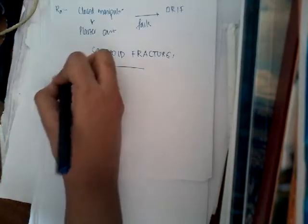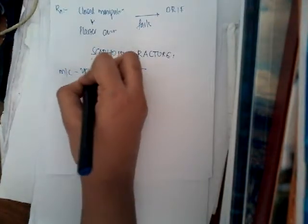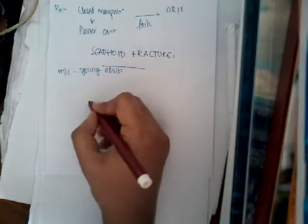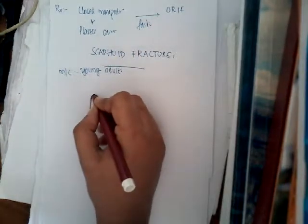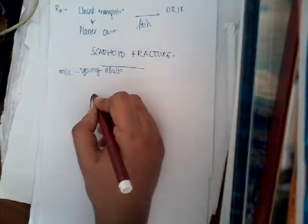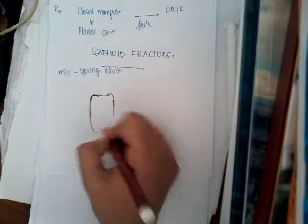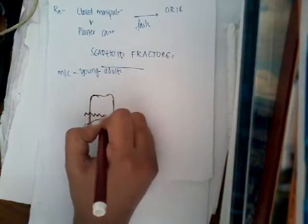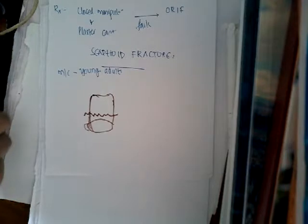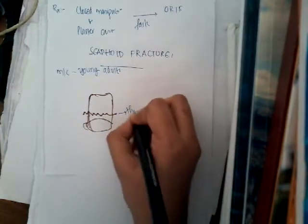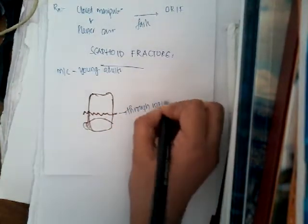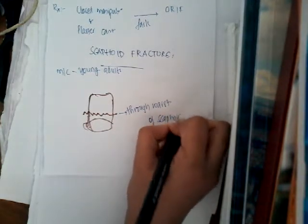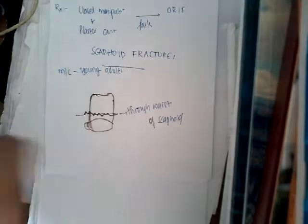This is most common in young adults. The fracture of the scaphoid bone occurs through the waist of the scaphoid bone. Rarely it occurs through the tuberosity, but mostly it occurs through the waist of the scaphoid bone.